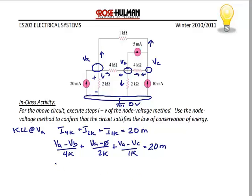Now we're ready to write the equations. We're going to have three KCL equations because we have four nodes. At VA, if I assume current out is positive and current in is negative, the current through the 4K plus the current through the 2K plus the current through the 1K equals 20 milliamps. Writing this in terms of node voltages using Ohm's law: (VA minus VB) over 4K, plus VA over 2K, plus (VA minus VC) over 1K equals 20 milliamps. If you always assume current is leaving, the coefficient on the VA terms will always be positive — a good way to check your work.